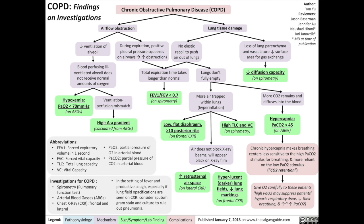The ventilation-perfusion mismatch results in a high A-a gradient; for an explanation of the A-a gradient, you can check out the relevant Calgary Guide slide or video. Airflow obstruction also means that during expiration, positive pleural pressure squeezes on airways to increase obstruction further. This results in total expiration taking longer than normal, producing an FEV1/FVC ratio of less than 0.7. COPD also causes lung tissue damage, and because the lung tissue is damaged, there is little to no elastic recoil to push air out of the lungs, further contributing to an FEV1/FVC ratio of less than 0.7.